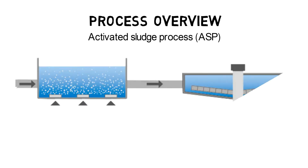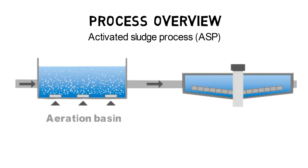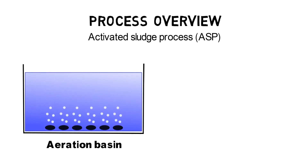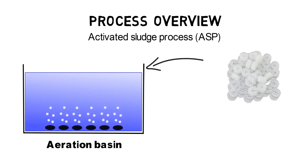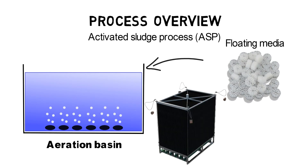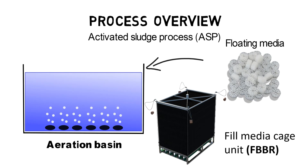After explaining how the activated sludge process works in part one, we're now taking a closer look at how to increase the wastewater treatment capacity of ASP with IFAS systems. IFAS stands for integrated fixed film activated sludge and describes the combination of fill media attached growth systems with the activated sludge process.